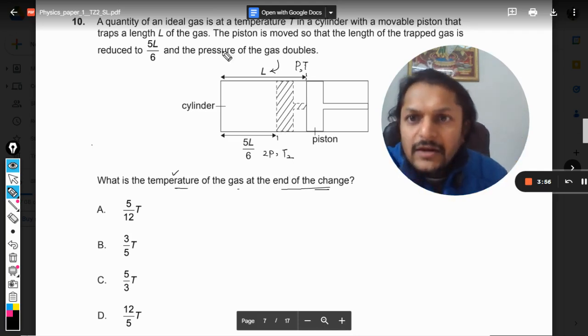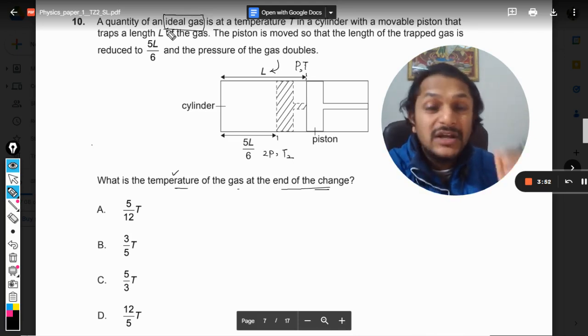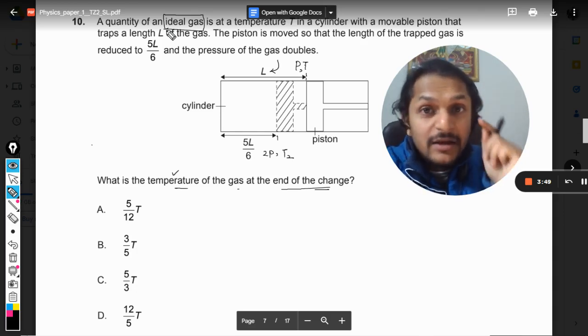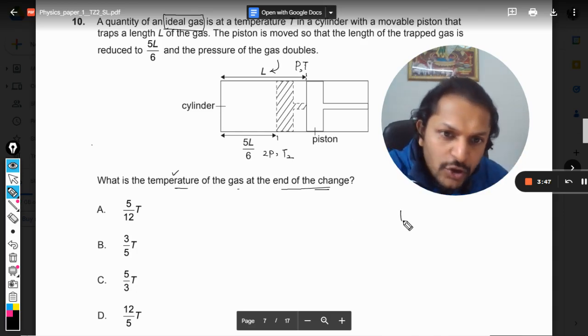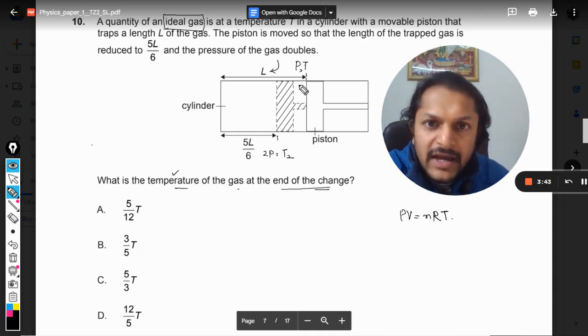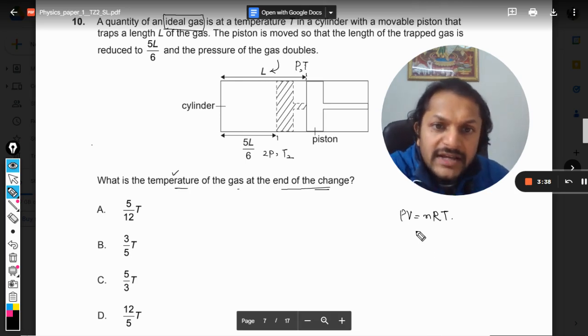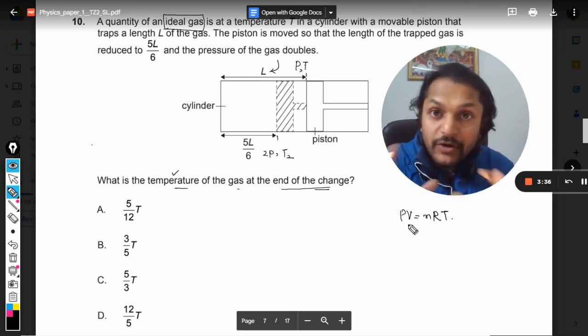Again, whenever we have an ideal gas, there is only one equation that should click you first time. Now what is that? PV is equal to nRT. So it's PV is equal to nRT, and for both of the cases the gas is not leaking out, so number of moles are going to be constant. R is anyways universal gas constant.